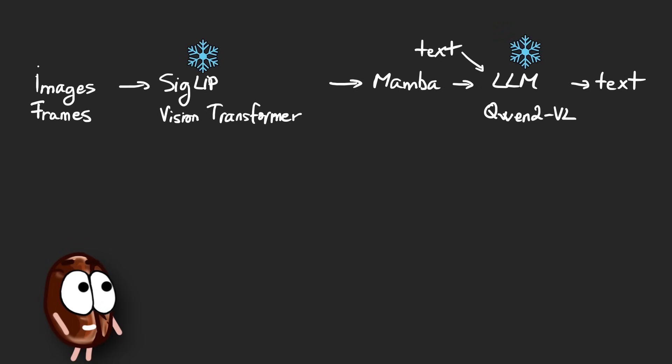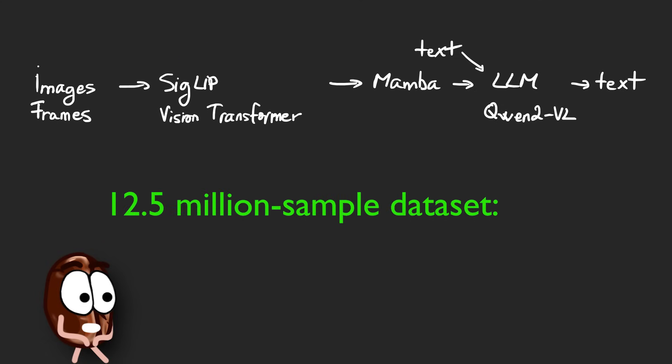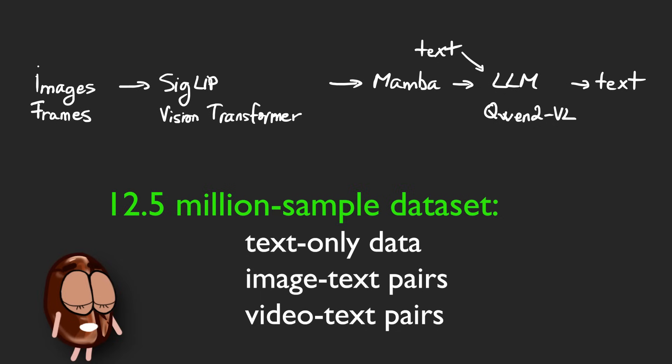Then comes the real deal: supervised fine-tuning of all the components on a 12.5 million sample dataset that includes text-only data, image-text pairs, and crucially, video-text pairs from diverse datasets. For longer video, they fine-tune further on 128-frame clips. In short, Storm is built from pre-trained modules and further fine-tuned to handle long videos efficiently and accurately.